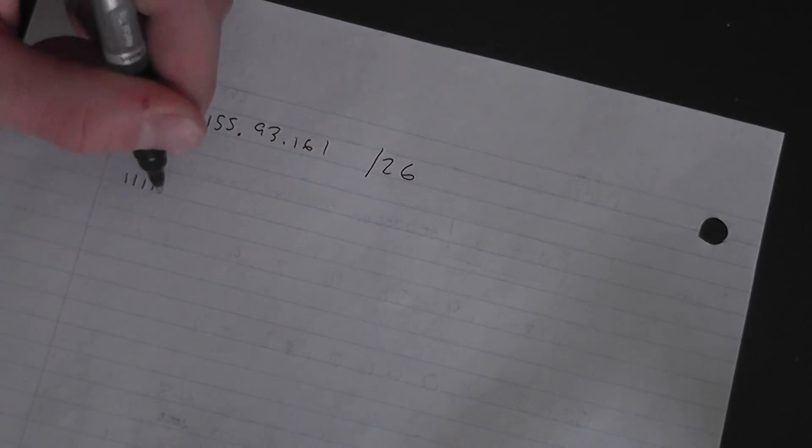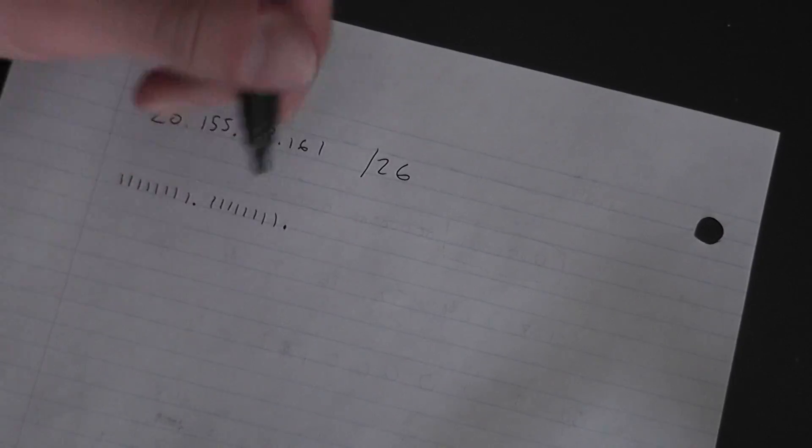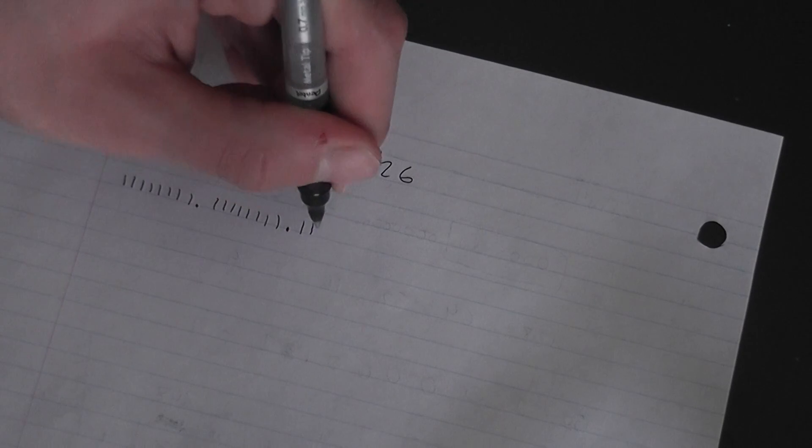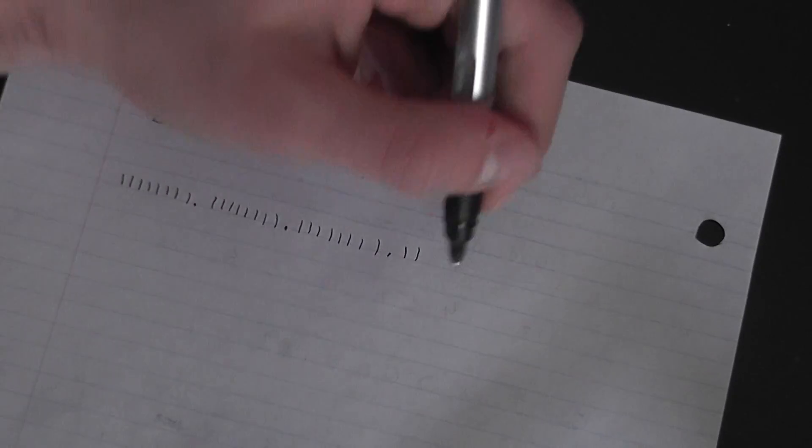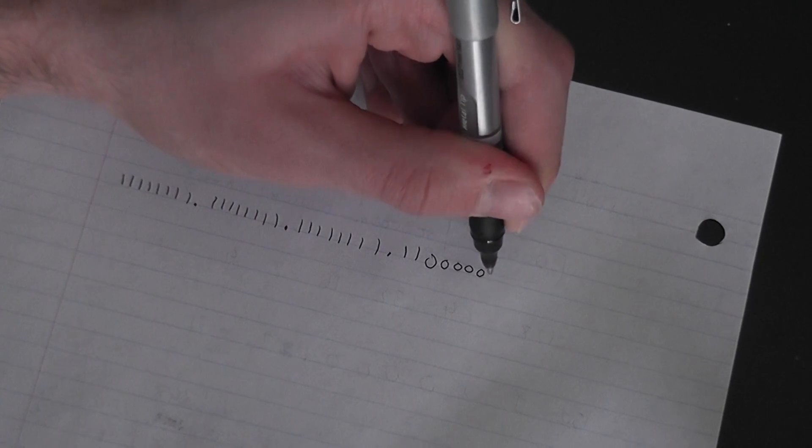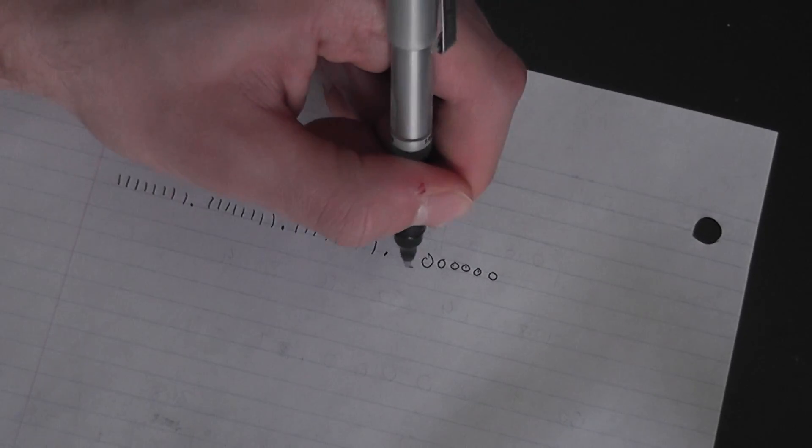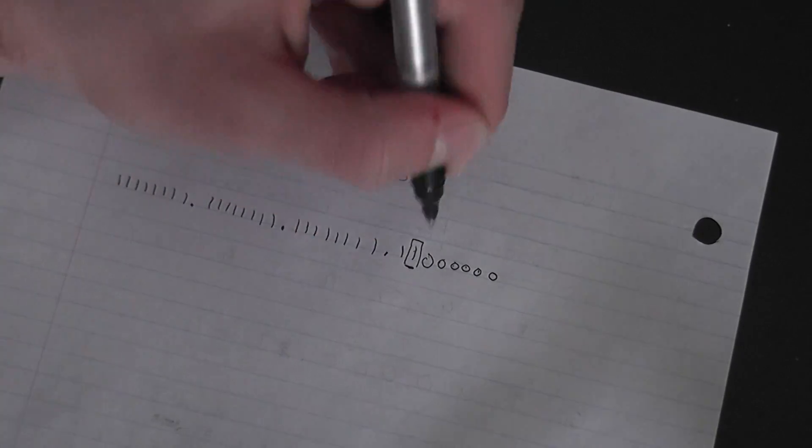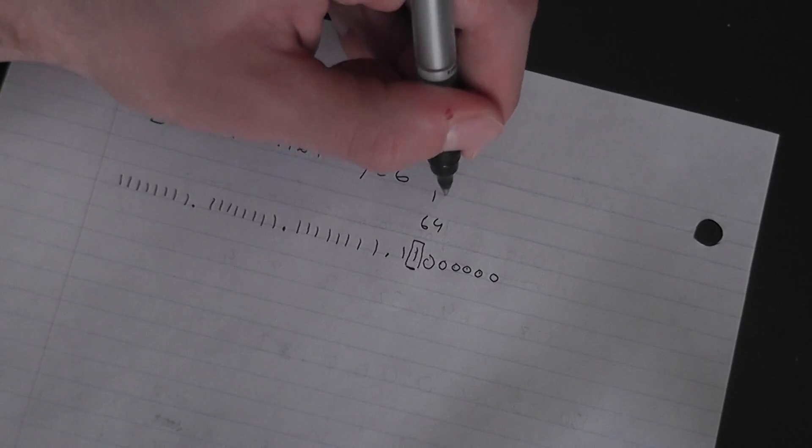So counting: 1, 2, 3, 4, 5, 6, 7, 8, that's 8. 1, 2, 3, 4, 5, 6, 7, 8, that's 16. 1, 2, 3, 4, 5, 6, 7, 8, that's 24. Then 25, 26.